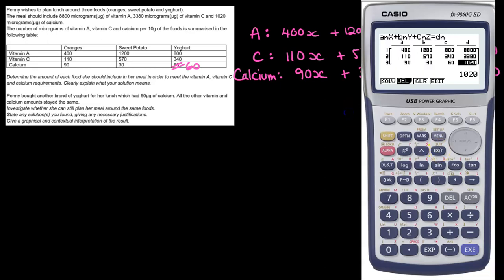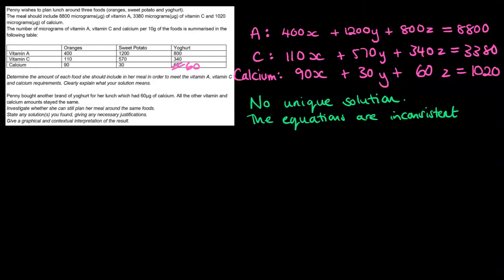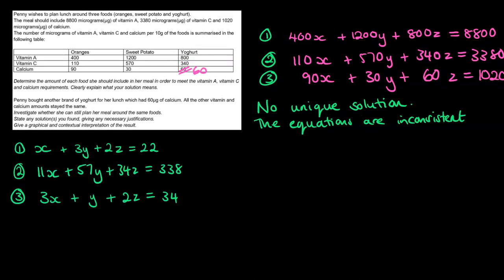There is no unique solution. Another way of saying that is that the equations are inconsistent. Now that could mean one of two things: either there is no solution at all, or there are infinitely many solutions. I'm going to relabel these equations as 1, 2, and 3, so we can continue working with them. Before I get to that step, I've gone through and simplified each of those equations down to the lowest form. On equation 1, I've divided all of those terms through by 400. On equation 2, I've divided them by 10. And on equation 3, I've divided them by 30.